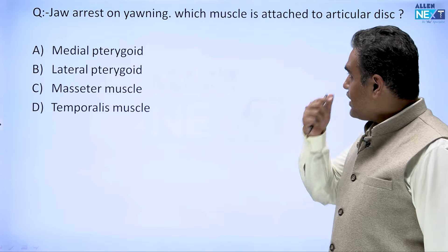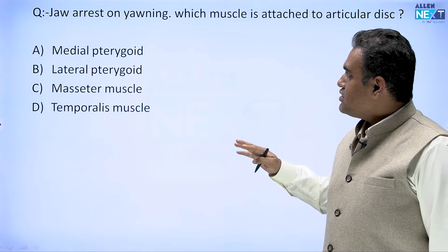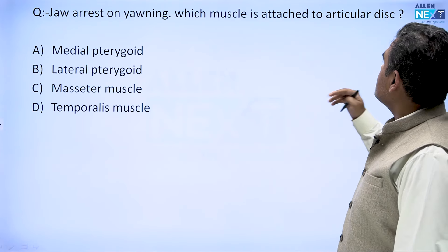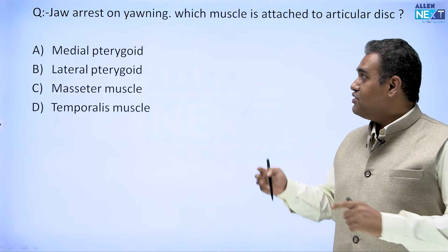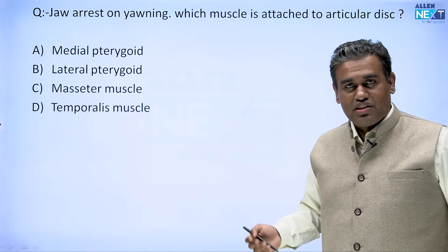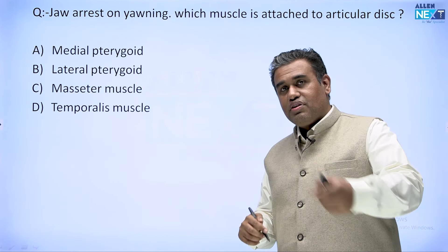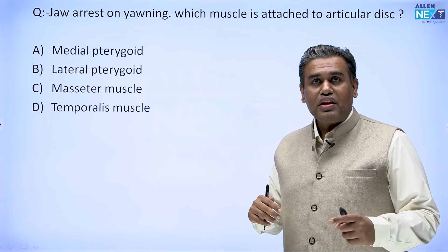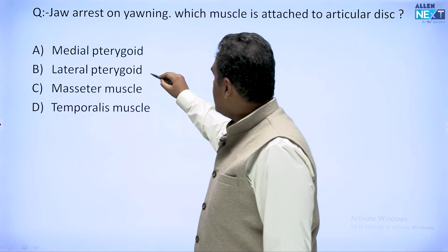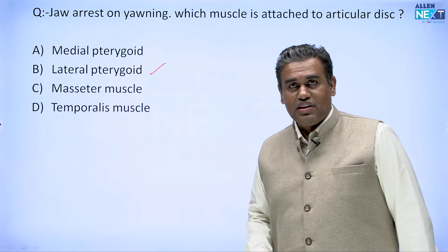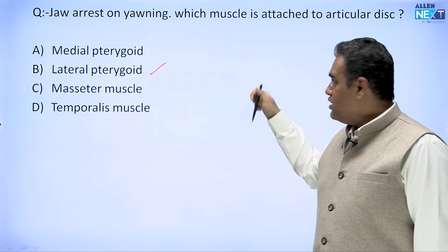The first question came on jaw arrest. There was a jaw arrest on yawning — which muscle is attached to the articular disc? People are asking about the locking of the jaw. We have discussed this in multiple classes before: the muscle attached to the articular disc, or in other words, the articular disc is said to be a degenerated part of which muscle? The answer is the lateral pterygoid. It is the lateral pterygoid muscle which helps in opening of the mouth and is attached to the neck of the mandible.